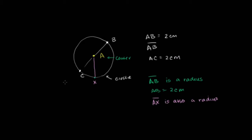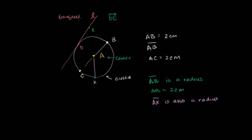You can also have other forms of lines and line segments that interact in interesting ways with the circle. You could have a line that just intersects the circle at exactly one point — let's call that point D. The only point on the circle that is also on that line is point D. We could call that line L. This line that only has one point in common with our circle, we call this a tangent line. So line L is tangent to the circle.